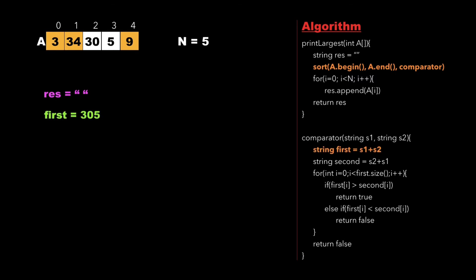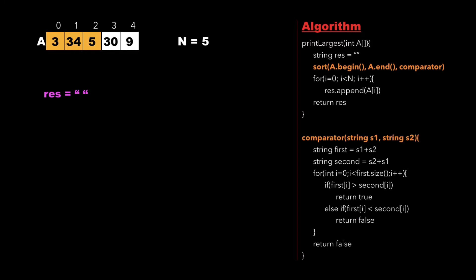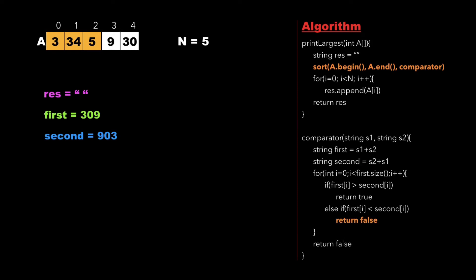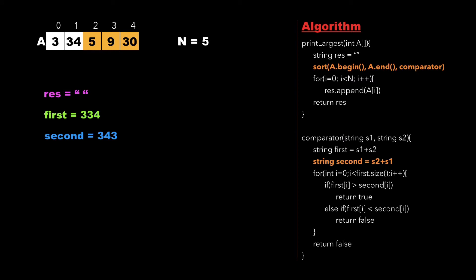As we can observe, 3430 is greater than 3034, that is second is greater than first, therefore we return false — we swap 30 and 34. Moving to the next pair 30 and 5, the values of first and second are 305 and 503, among which 503 is greater than 305, therefore again we return false and swap 30 with 5. Finally we reach the end with values 309 and 903, among which 903 is greater, so again we return false and swap, placing 30 at the end of the array.